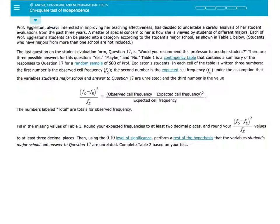The last question on the student evaluation form, question 17, is 'Would you recommend this professor to another student?' There are three possible answers for this question: Yes, maybe, and no. Table 1 is a contingency table that contains a summary of the responses to question 17 for a random sample of 500 of Professor Eggleston's students.